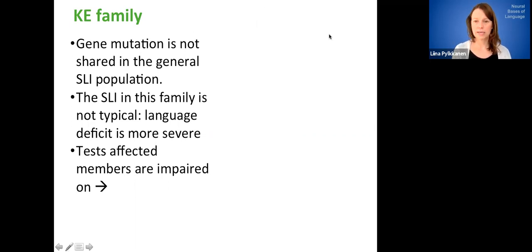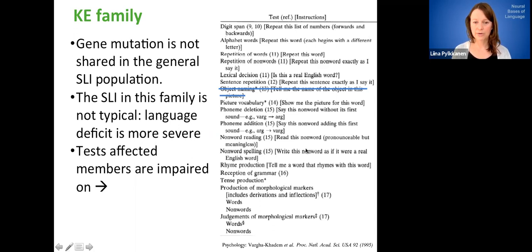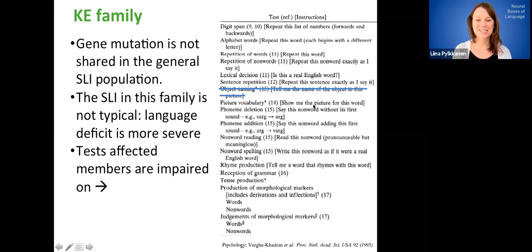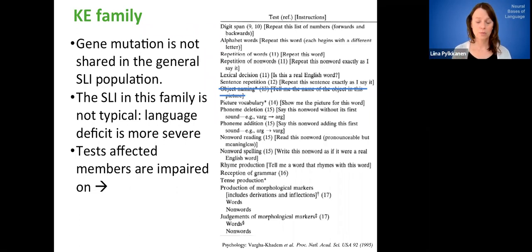Here's just some data from a behavioral battery on this family. This is some of the earliest publications from 1995. The point is not to read through all these tests. The point is just that all of these tests are ones in which they show an impairment. I've crossed out one because that is actually object naming is one in which they scored not significantly differently from the unaffected members of the family. But in general, pretty much any language test that the affected members will be reliably worse than the non-affected members.